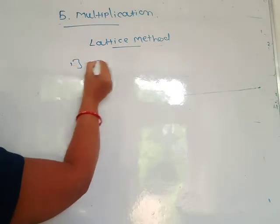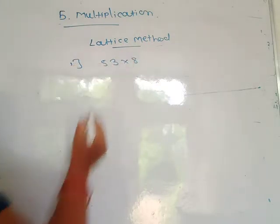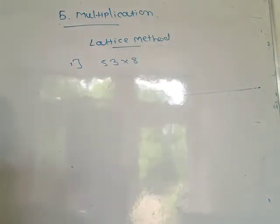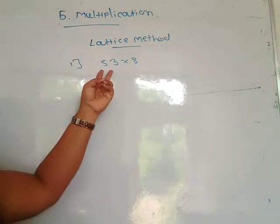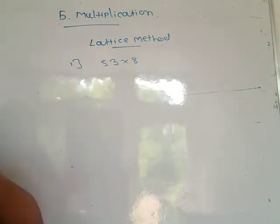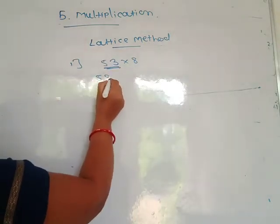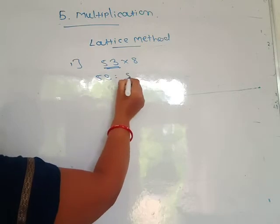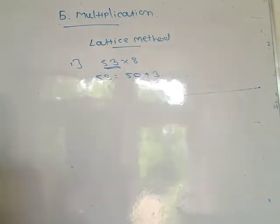First one example. For example, 53 into 8 — this two-digit number multiplied by this one-digit number. Firstly, you write the expanded form of this number. 53 is equal to 50 plus 3. 53 means 50 plus 3.